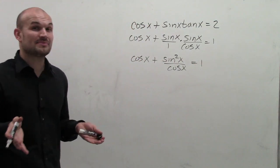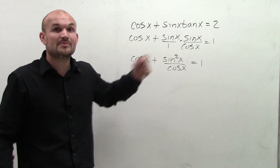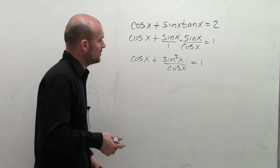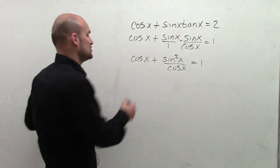Now, I start seeing I'm getting somewhere because I like when I have sine squared of x because I know that I can start using Pythagorean identities, right? So let's go ahead and combine these two terms together.